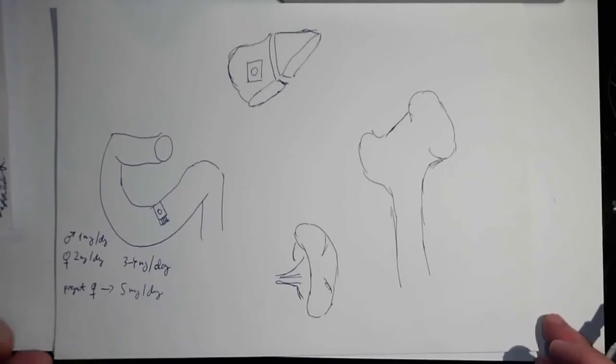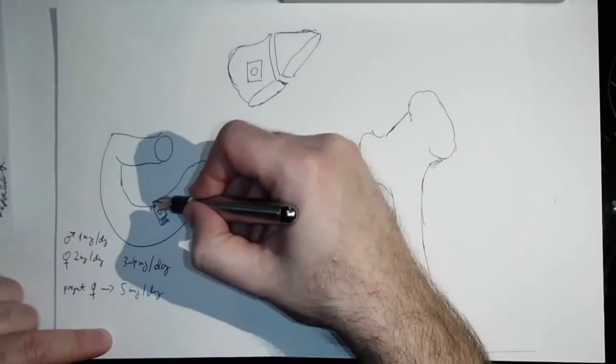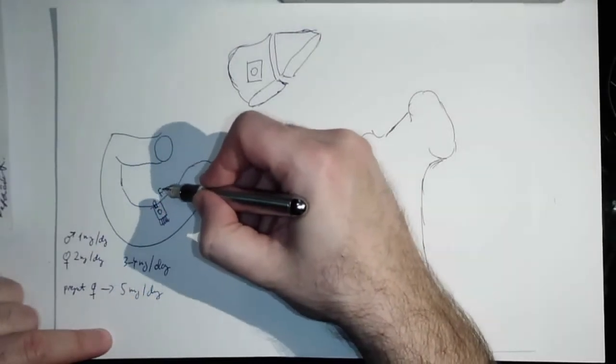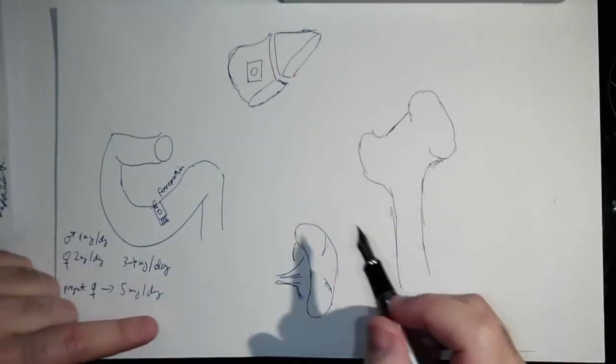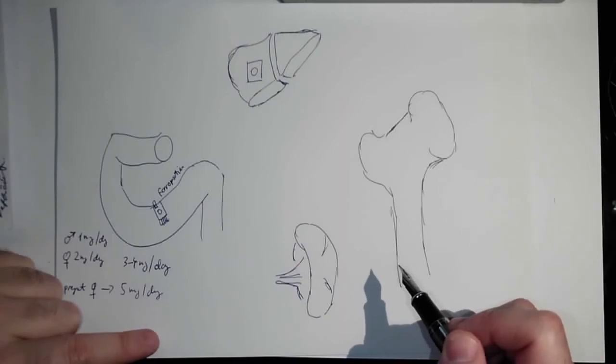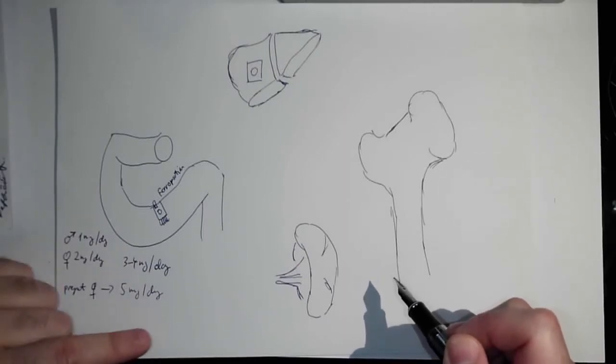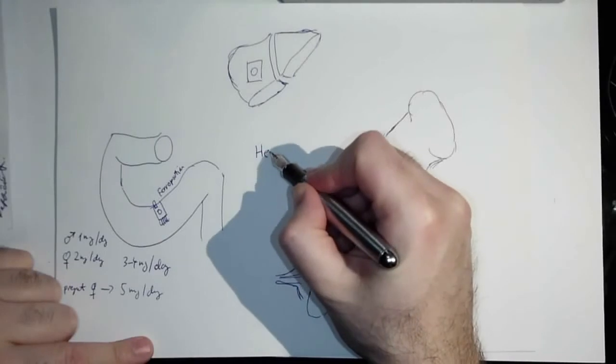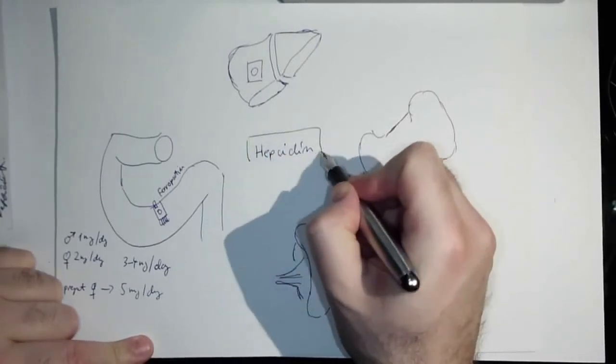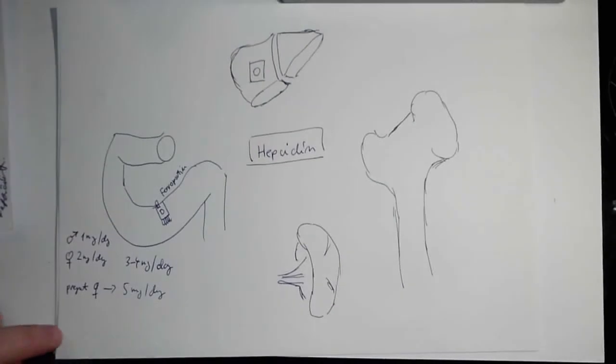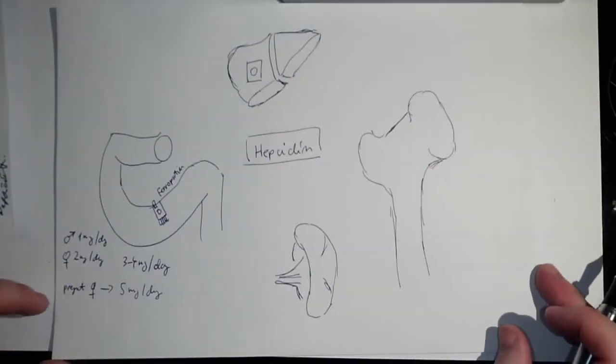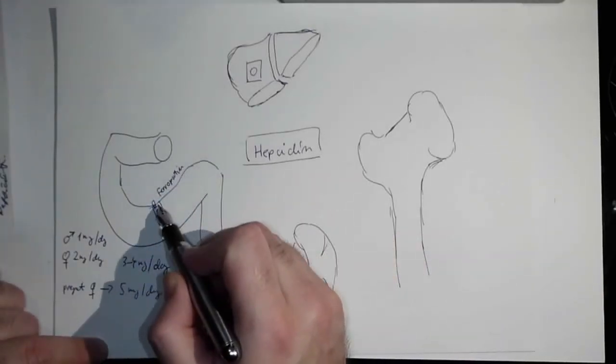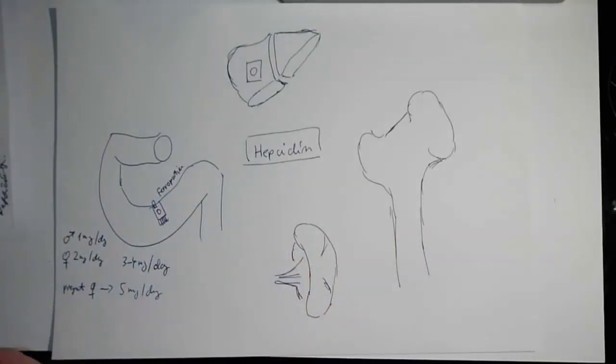So how is it with iron absorption? All the enterocytes have this special transporter over here which is called ferroportin. The ferroportin is regulated, whether it's open or closed, by a special molecule which you all know and that is hepcidin. Hepcidin is also an acute phase reactant, produced by the liver, and very strongly controls iron absorption or release of iron from certain cells.